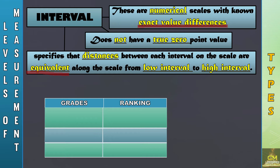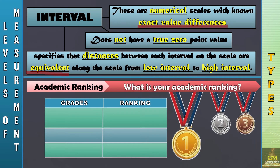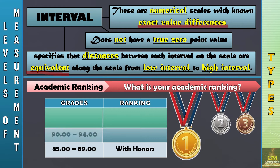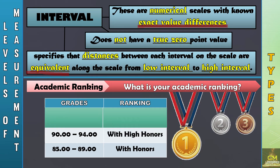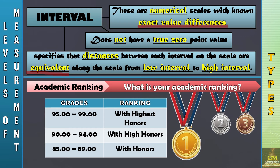Meaning, there is an exact value between different intervals. Let's have the example on academic ranking. The question is: what is your academic ranking? In order to recognize the academic ranking of an individual, he or she must fall into a certain range of grade. For example, if a person's grade would range from 85 to 89, his ranking may be classified as with honors. If he goes higher, say 90 to 94, he could be classified as with high honors. Furthermore, if a person would have a grade of 95 to 99, he can be classified as with highest honors. Take note that for each particular level, we have the interval of 5 points. Hence, this is an example of an interval level of measurement.